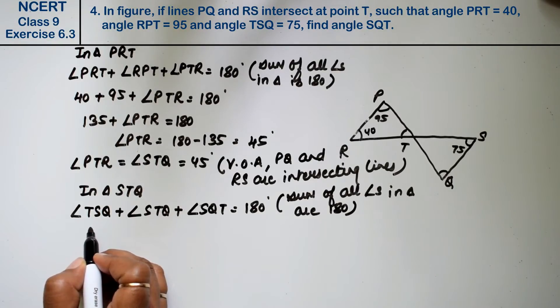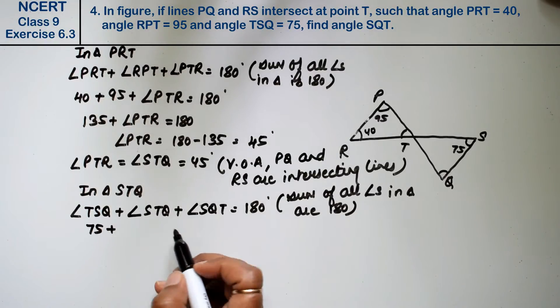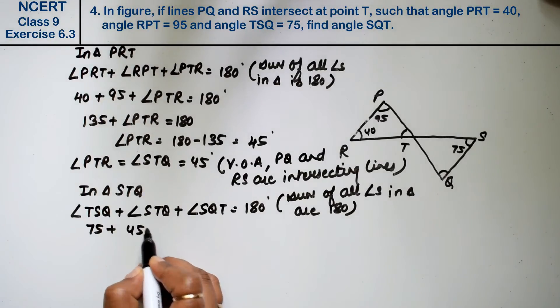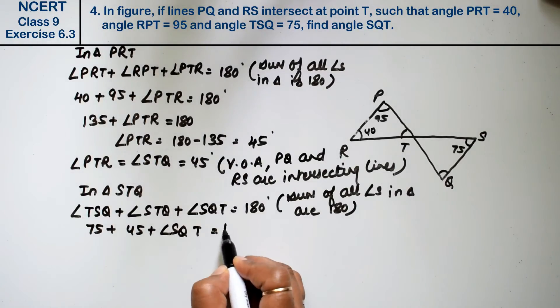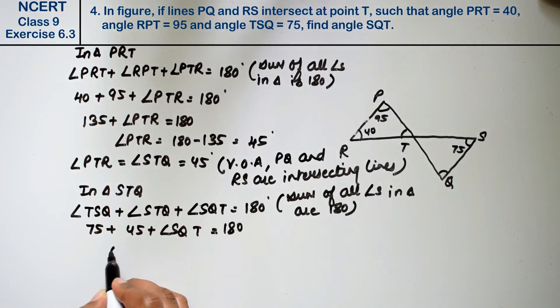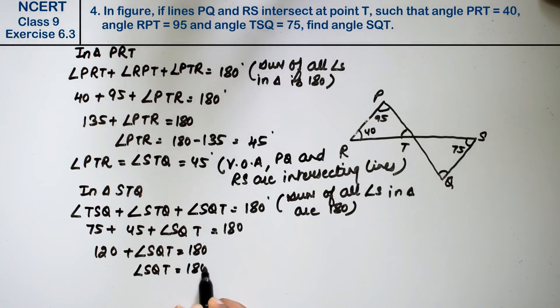Angle TSQ is 75, angle STQ is 45 plus SQT equals 180. 75 plus 45 is 120 plus SQT equals 180. So SQT is 180 minus 120, that is 60 degrees, the answer.